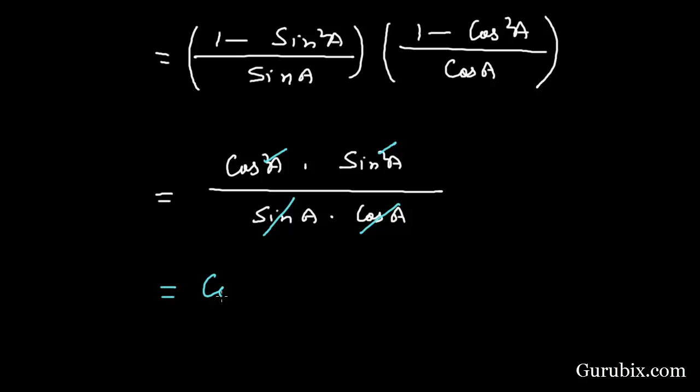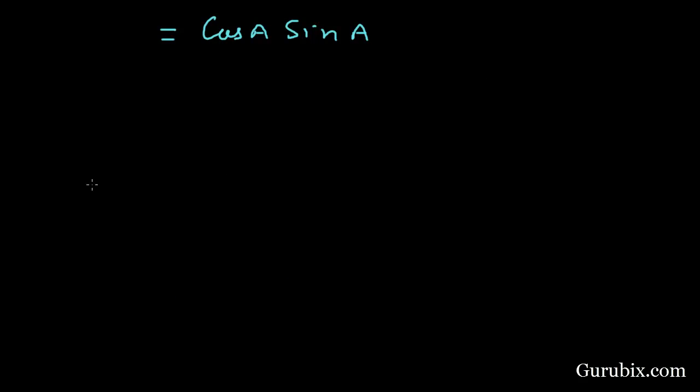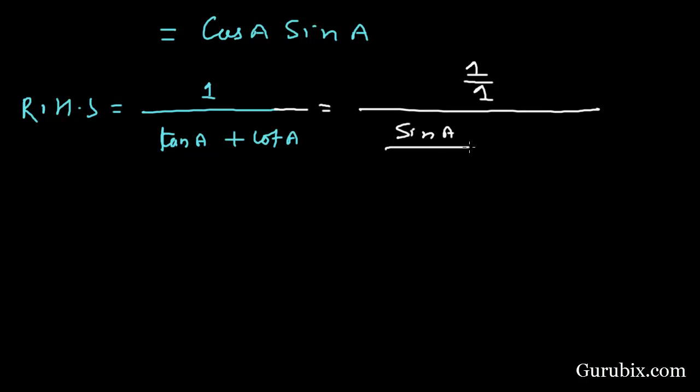Now we shall take the right-hand side of the identity, that is 1 over tan A plus cot A. This equals 1 over, we can write it as, sin A over cos A plus cos A over sin A.